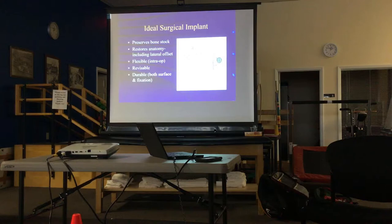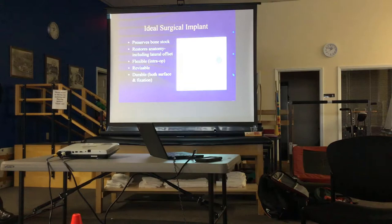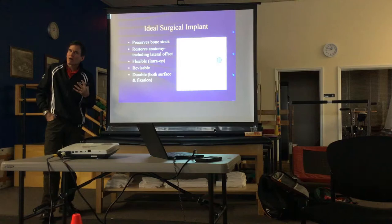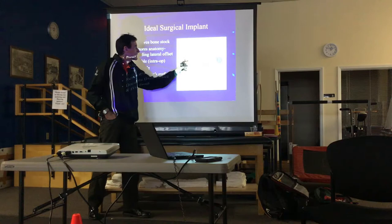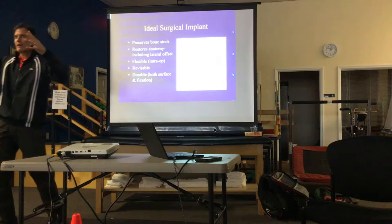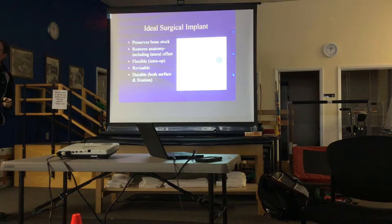The ideal surgical implant, talking about anatomic TSAs — not the reverse — you want to restore the anatomy as perfectly as possible. You want the same offset or distance from the rotator cuff insertions to the glenoid so that the implant isn't too short or doesn't overstuff the joint, causing loss of range of motion. It has to really replicate the anatomy as much as possible.